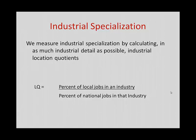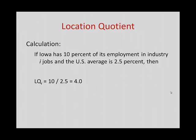Here's what a location quotient is. It's a measure of industrial specialization, and we're going to compare our economy to the national economy. The location quotient is simply the percentage of local jobs in an industry compared to that same percentage at the national level. For example, if Iowa has 10% of its employment in industry I, and the U.S. average for that industry is 2.5%, then the location quotient for industry I is 10% divided by 2.5%, which equals 4.